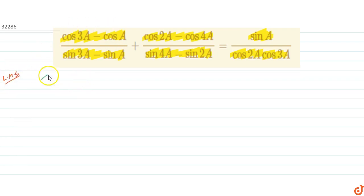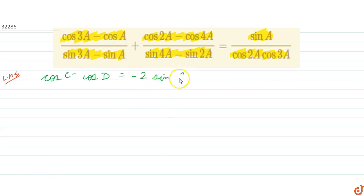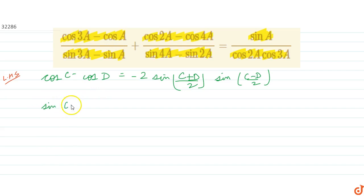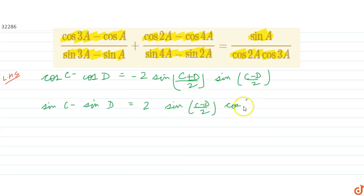On the left hand side, we will use the formula: cosC - cosD equals minus 2 sin((C+D)/2) times sin((C-D)/2), and sinC - sinD equals 2 sin((C-D)/2) times cos((C+D)/2).